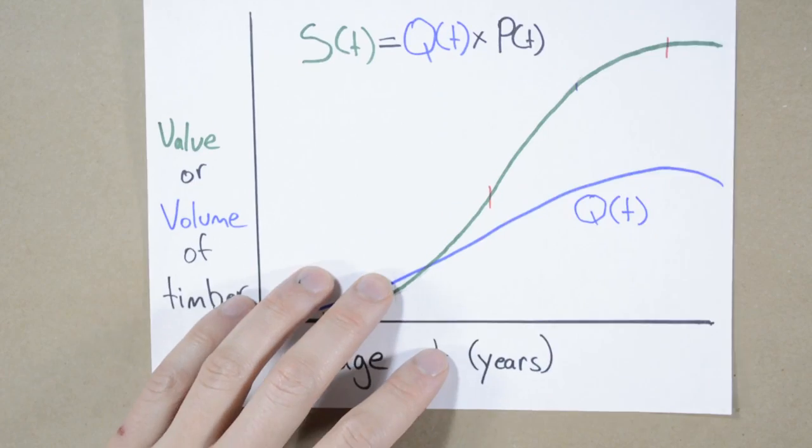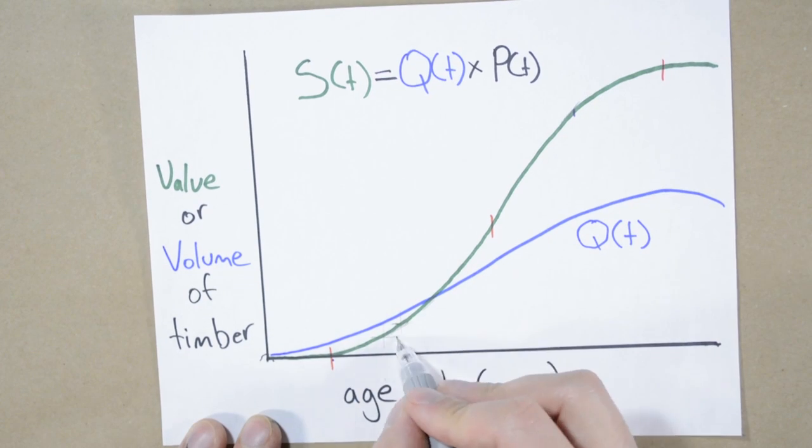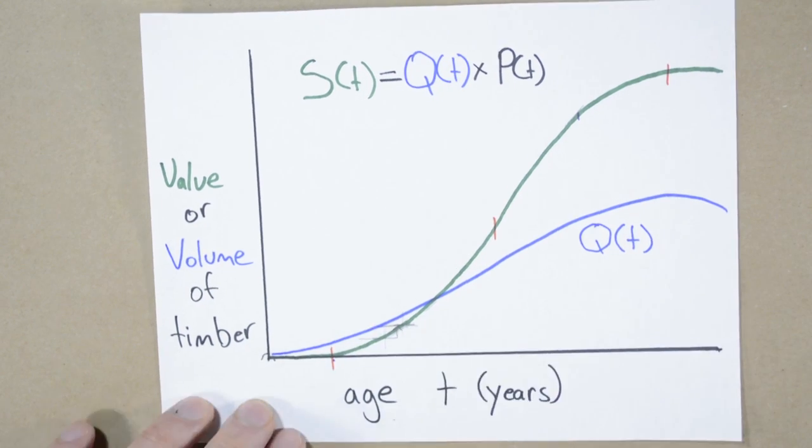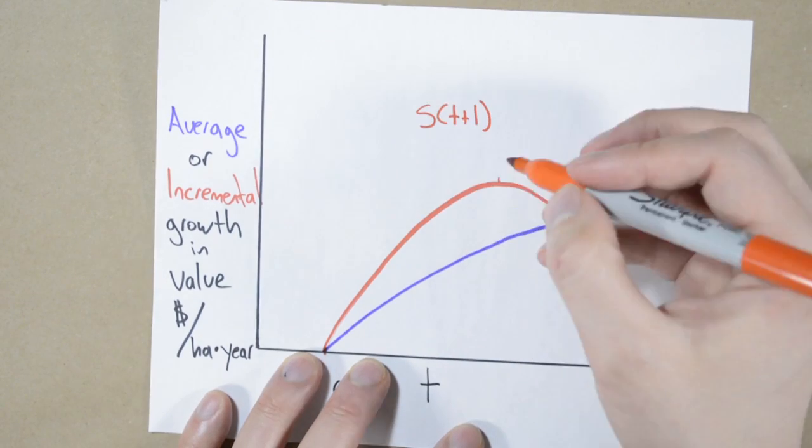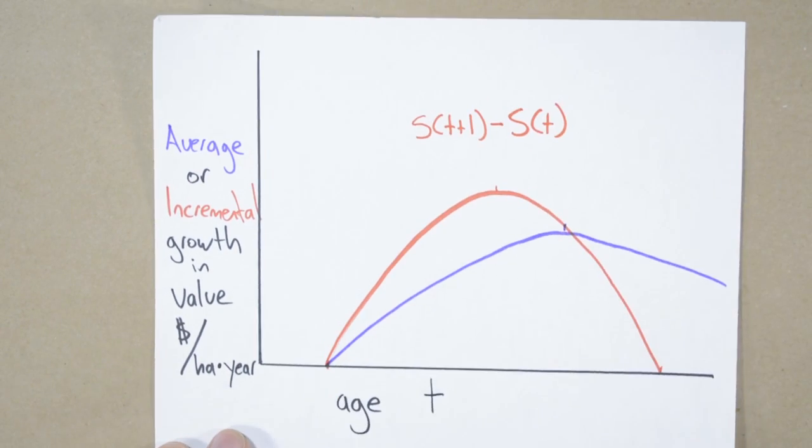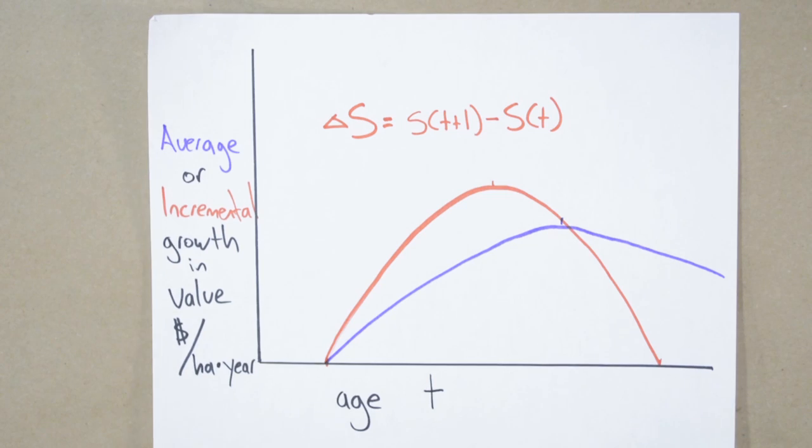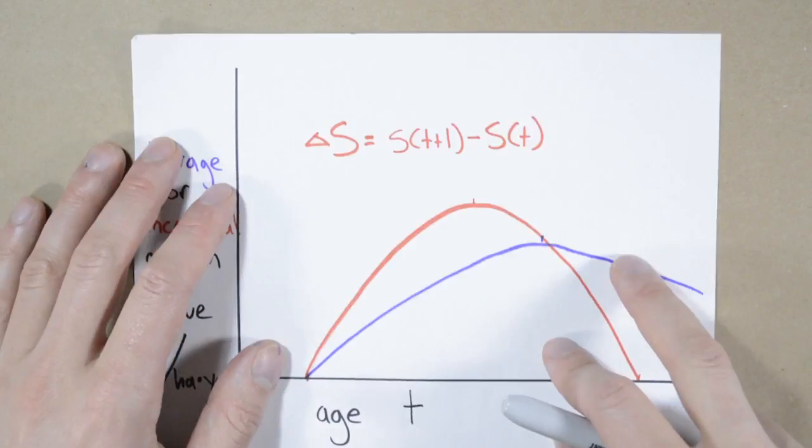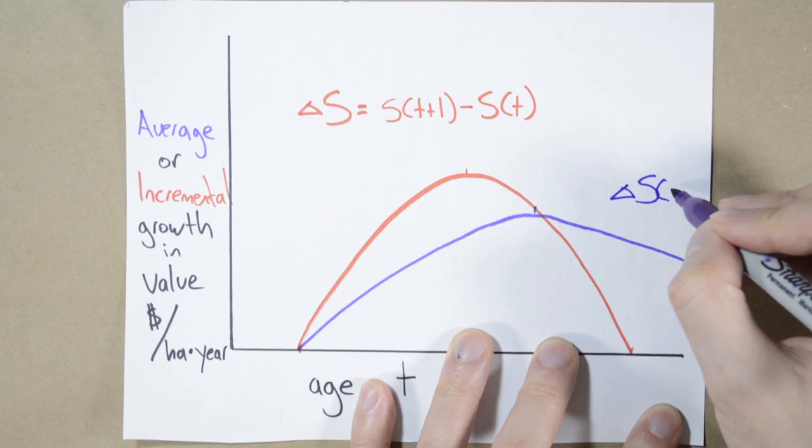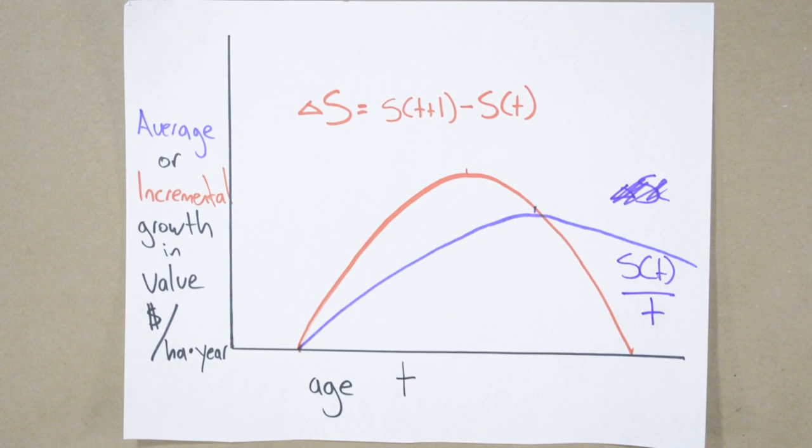We're close enough. The incremental line represents the growth that happens in each year. So we can model this line as the stumpage value one year from time t minus the stumpage value at time t. This will give the change in the stumpage value at any given year t. The average growth is the stumpage value divided by the year. So S(t) divided by t.